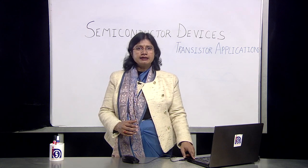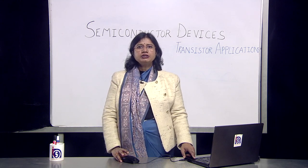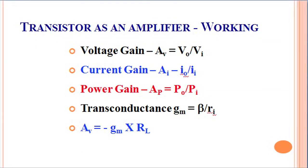Let's understand the output cycle. In the case of a transistor, there's a net voltage gain — that means the output voltage with respect to the input voltage is larger. This is due to a large amount of current gain, which is a typical characteristic of the common emitter configuration. AV represents the amount of voltage gain, AI represents the amount of current gain, and correspondingly we have the power gain, which is output power divided by input power. The term transconductance is the ratio of beta to the input resistance, and the net voltage gain can be calculated as minus of the transconductance multiplied by the load resistance.